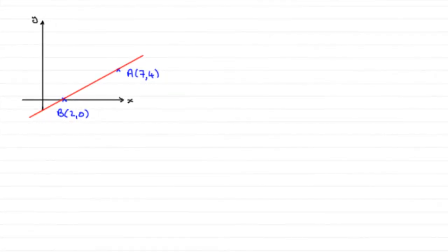Now for this first question, we've got to find the equation of the line passing through these points A and B. A with coordinates 7, 4 and B with the points 2, 0.